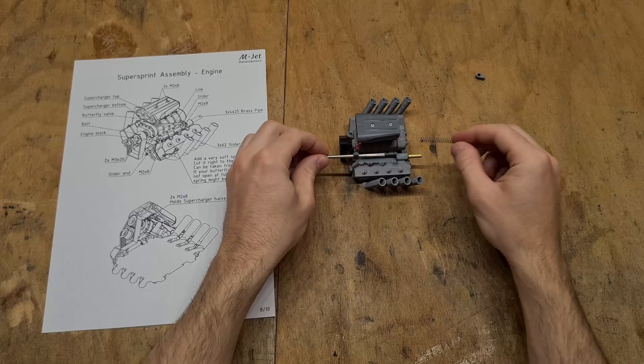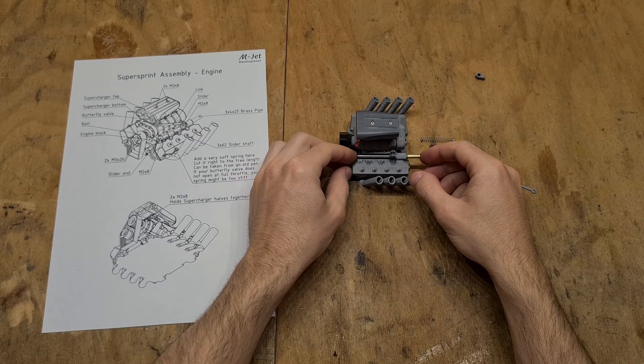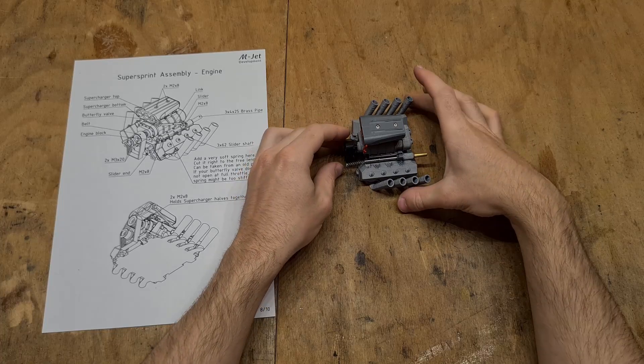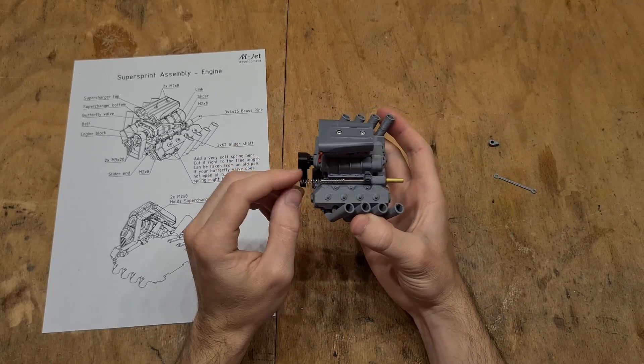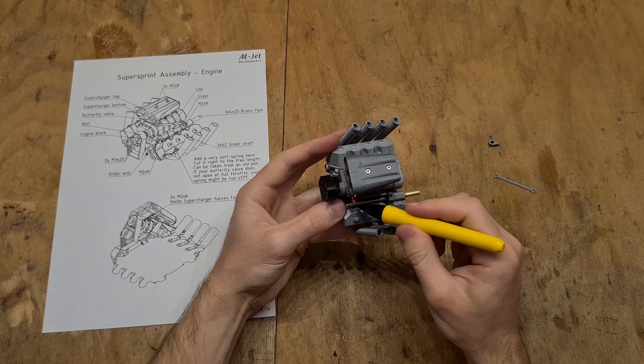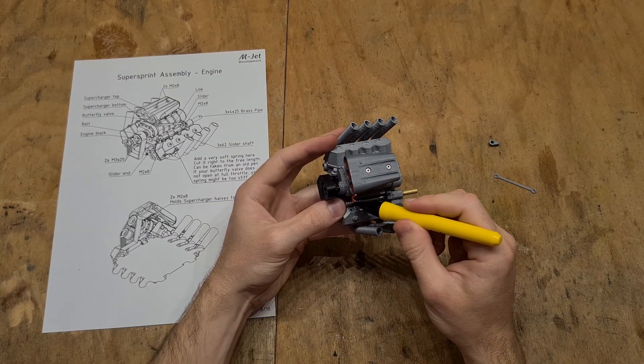To assemble the slider mechanism, slide the shaft with the slider into the brass tube. Test fit the spring and mark where you need to cut it. You should cut it just enough so that the spring takes all the space between the slider and the slider end, which we will mount on in a moment.